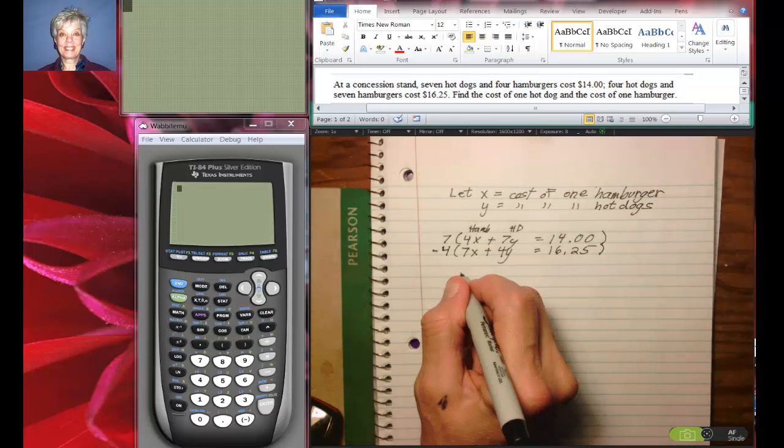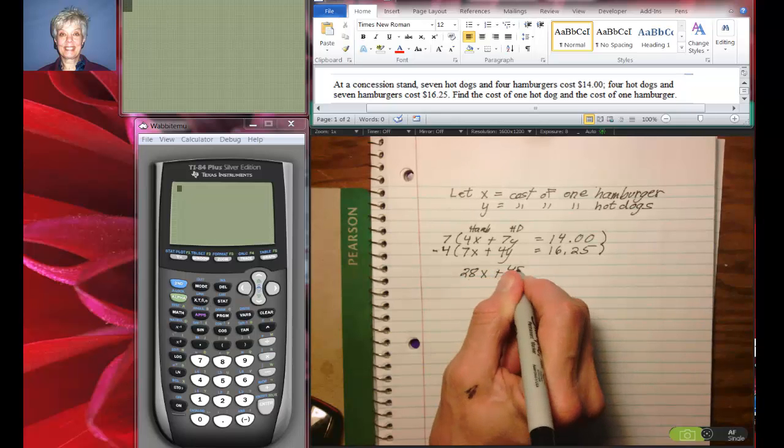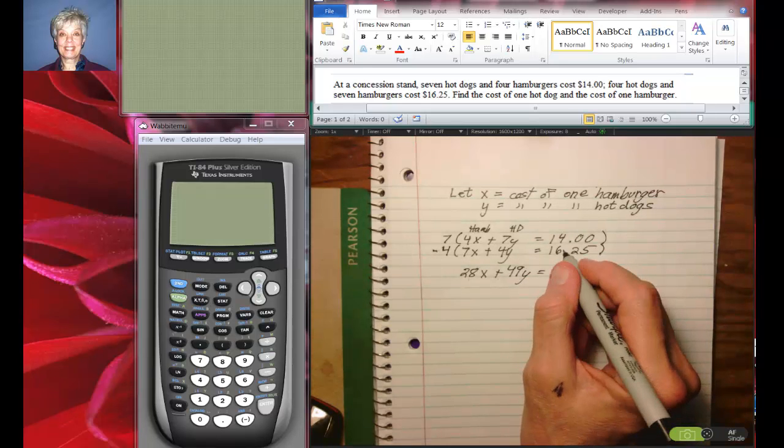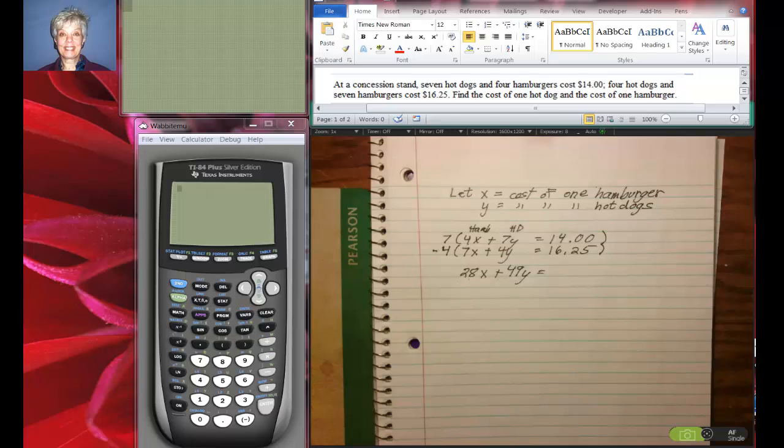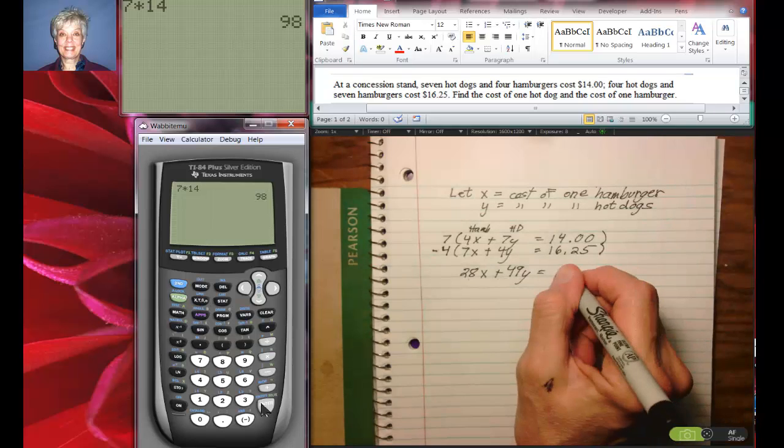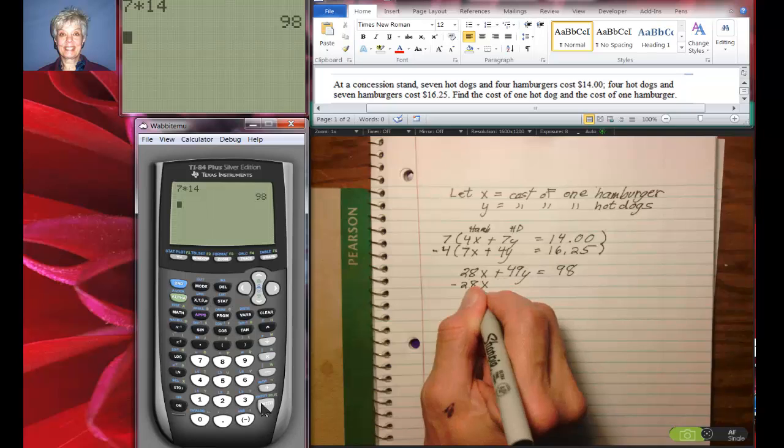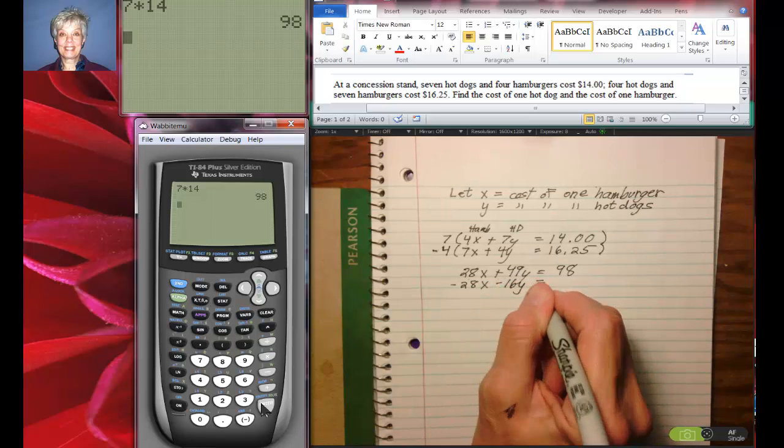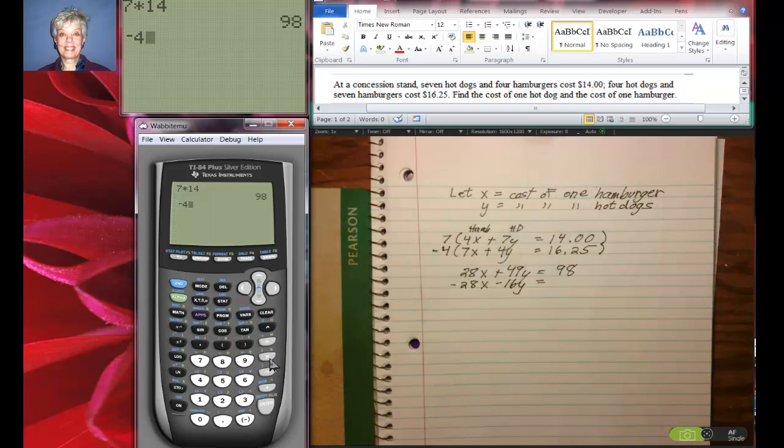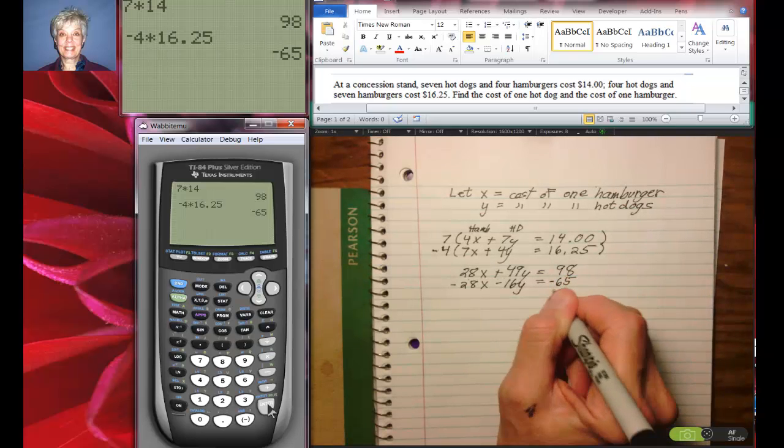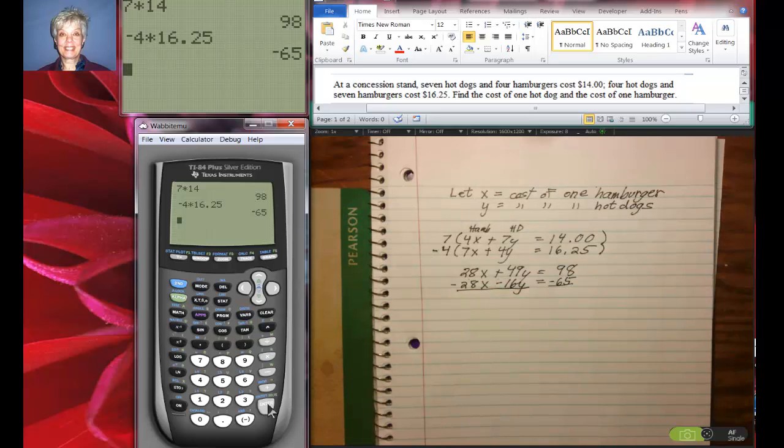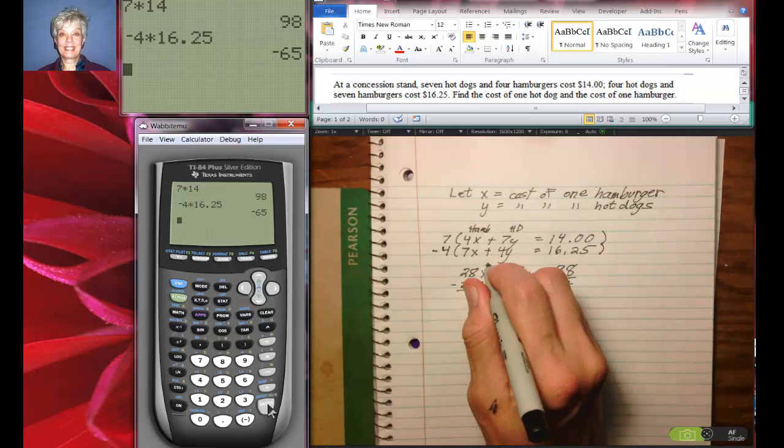Okay, so we're going to have 28x plus 49y equals 7 times 14, which is 98. And then negative 28x minus 16y equals negative 4 times 16.25, which is negative 65. Let's see, these zero out.